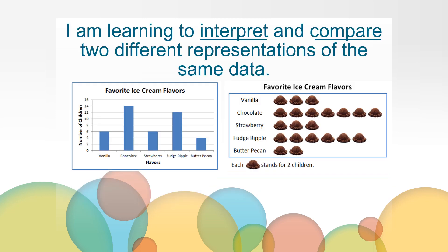Today you will be learning to interpret and compare two different representations of the same data. On the screen you can see a bar graph and pictograph. Both of these representations show favorite ice cream flavors of some children. It means that we will use the representations to get information and then think about what is the same and different about the ways we are seeing the data.